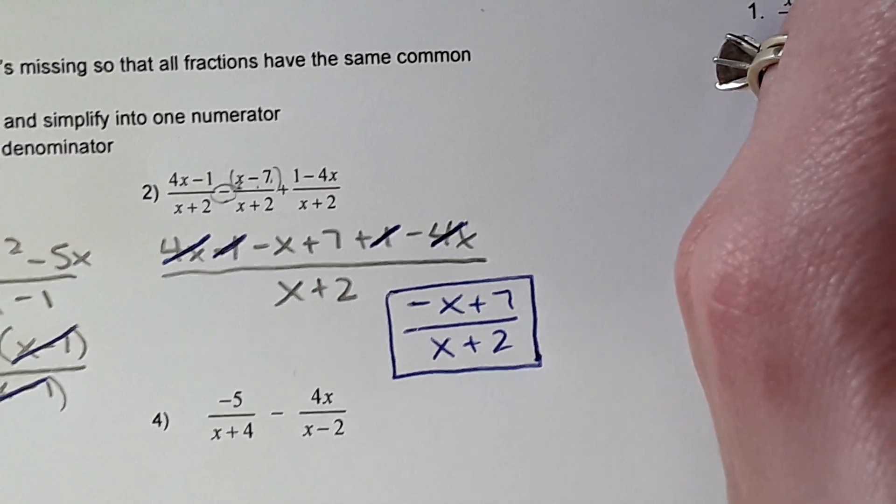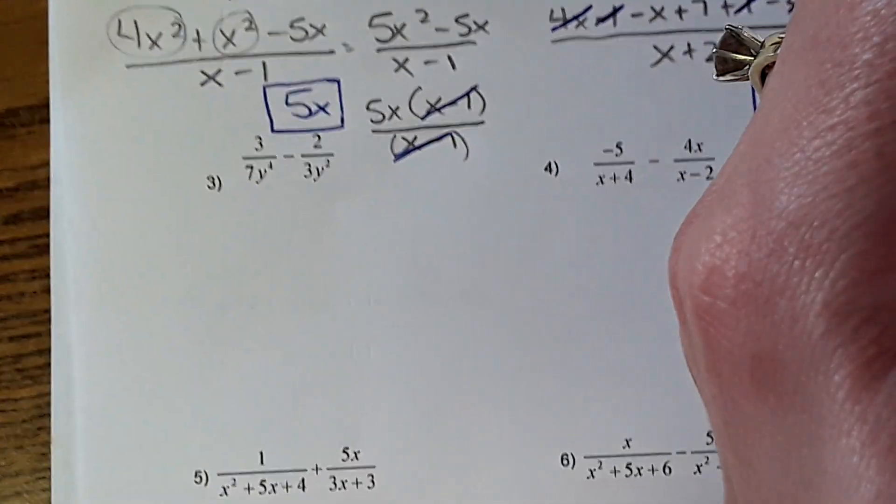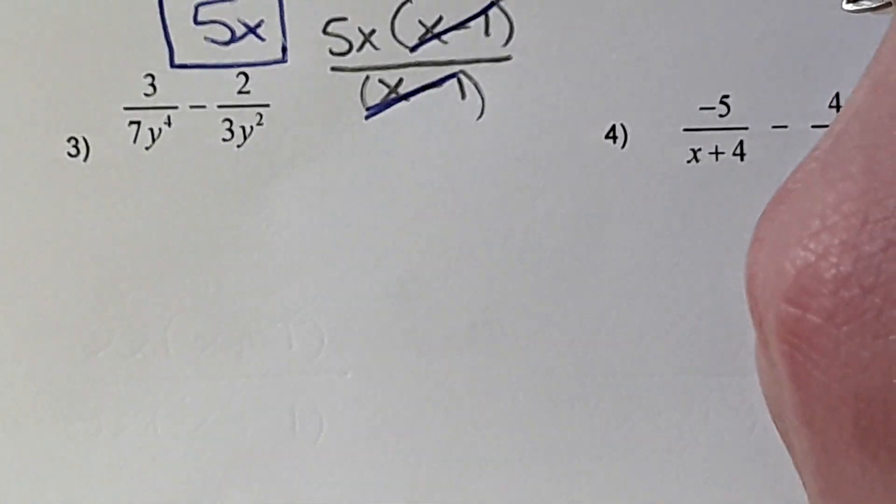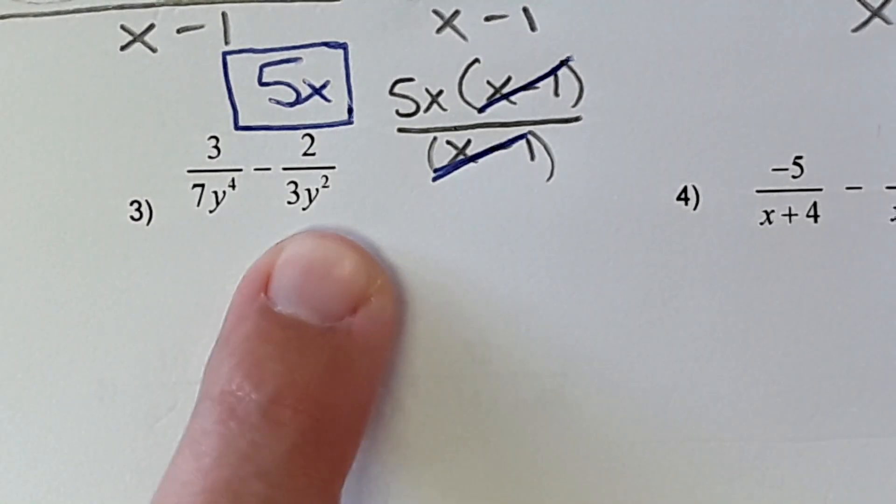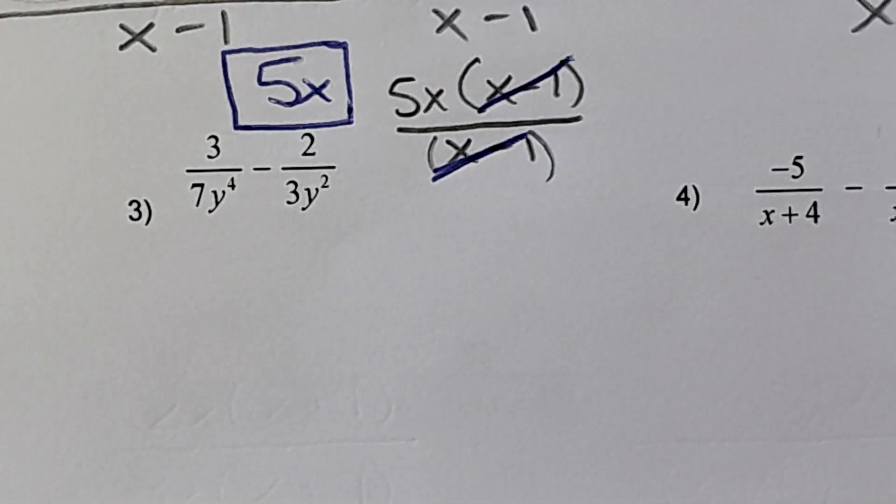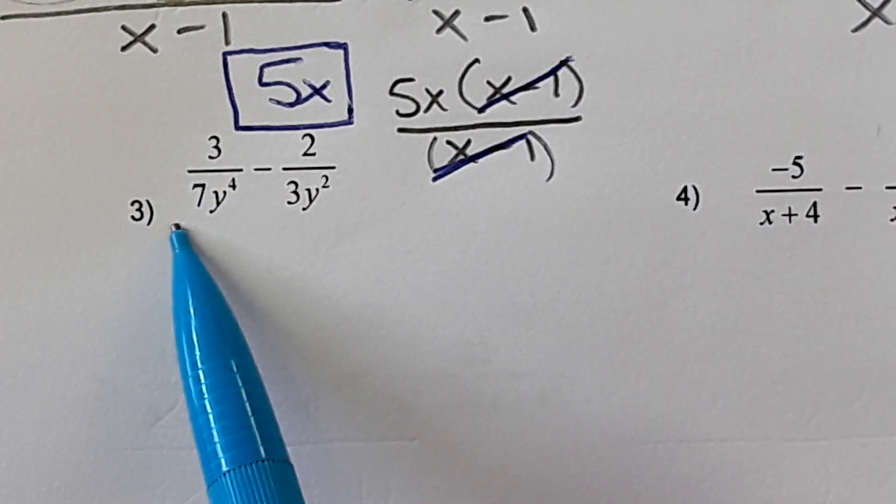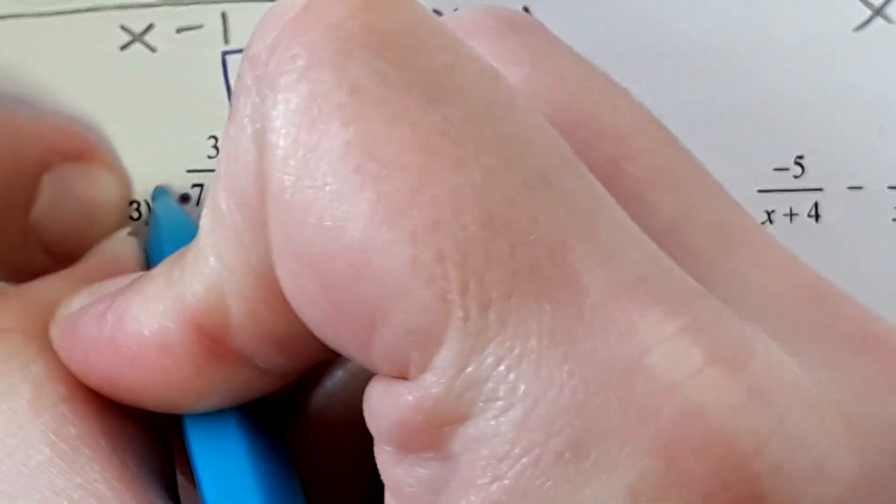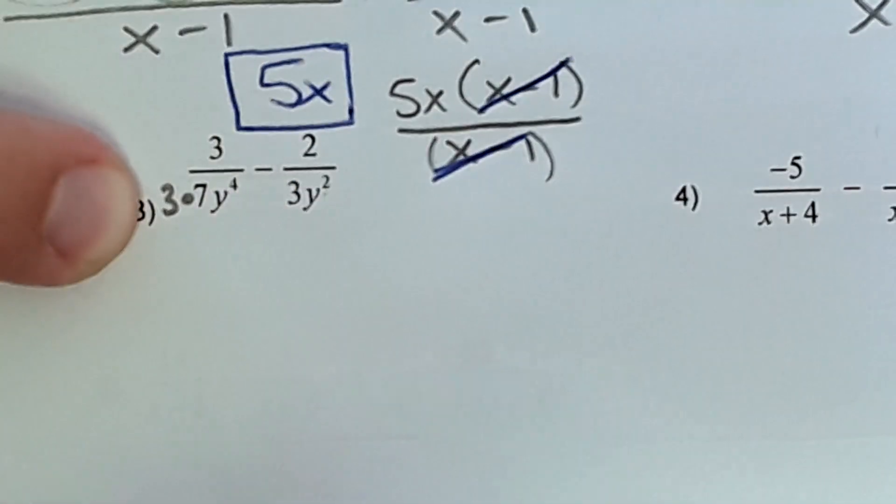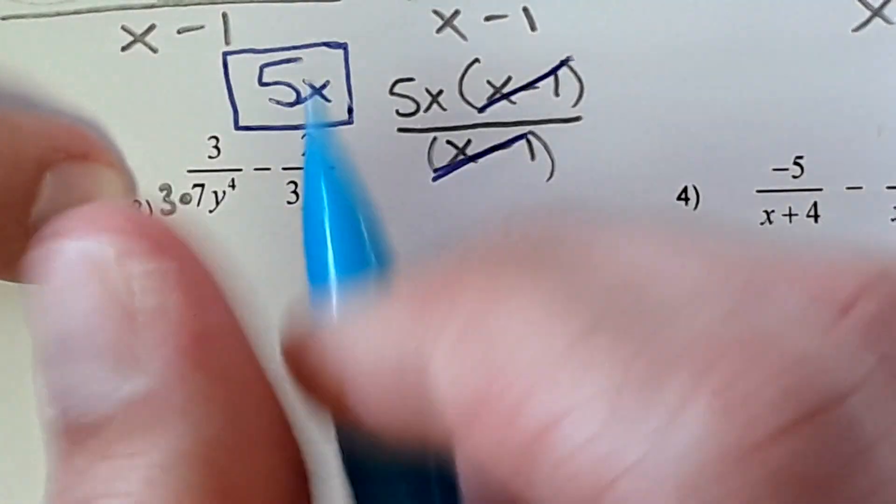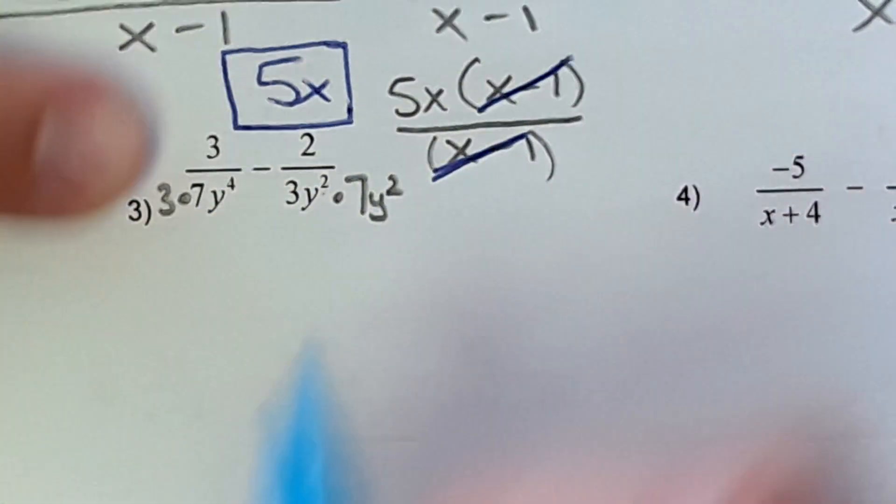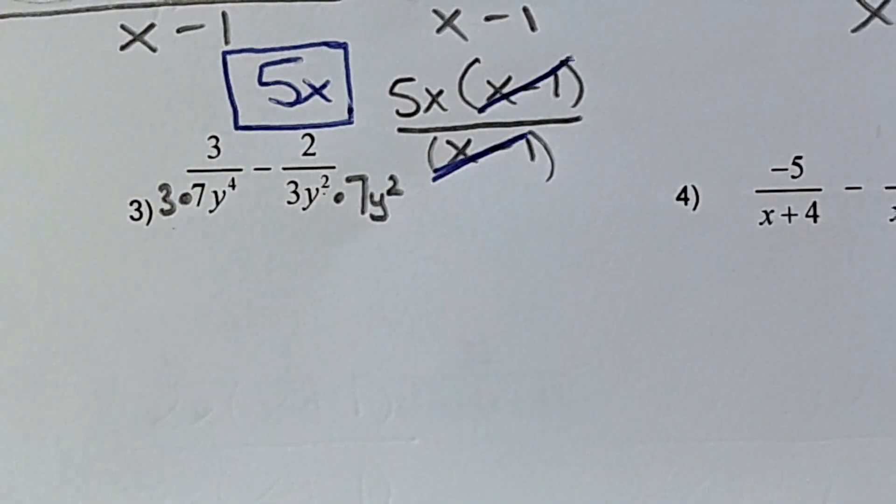Okay. Next. Number 3. Okay. Now they gave us something where the denominators are not the same. So we have to make them the same. We want a number, so we want to multiply this by something so that it matches this and vice versa. 21 would be the least common multiple. So if I multiply this by 3, I will get 21y to the fourth power. And if I multiply this by 7y², then I can get it to match 21y to the fourth power.